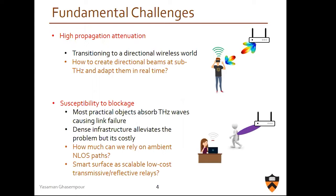The second challenge is sensitivity to blockage. Most objects like our everyday items can actually block this signal and cause link failure. Traditionally we rely a lot on multipath, but one question is how much we can actually rely on this non-line-of-sight path as we go above 100 gigahertz. If the ambient non-line-of-sight path does not exist, can we come up with artificial paths — for example, using a smart surface? That has been a hot topic.